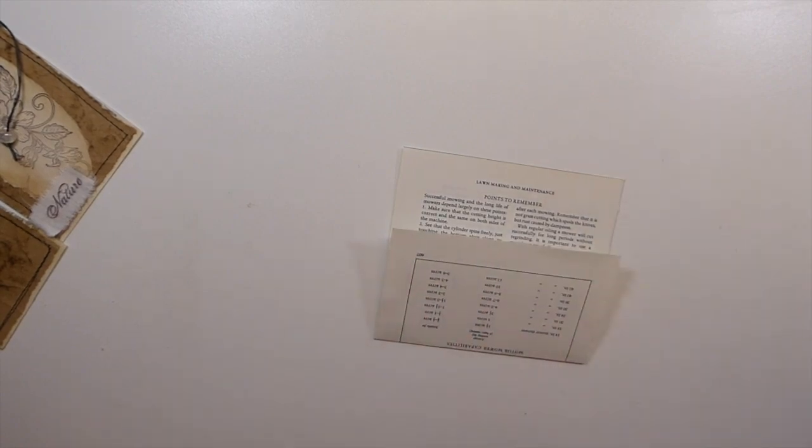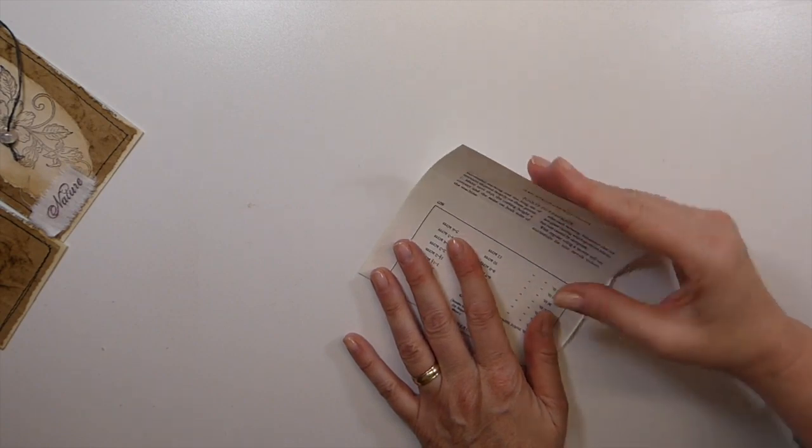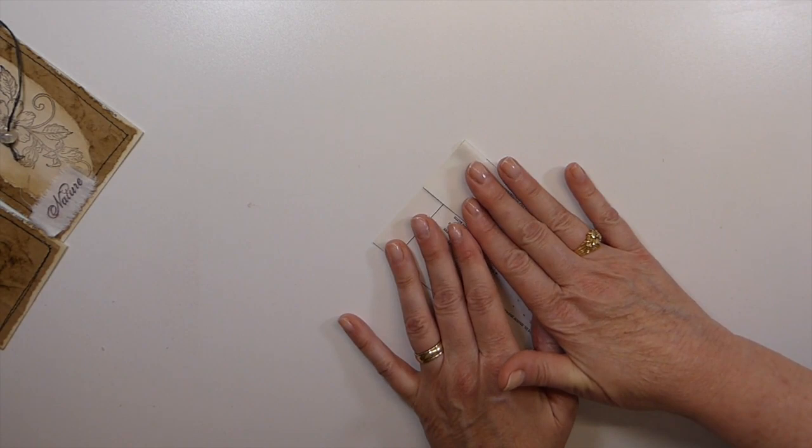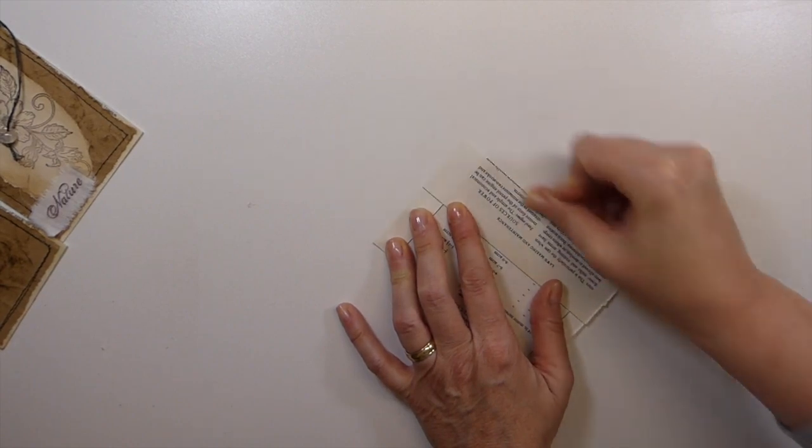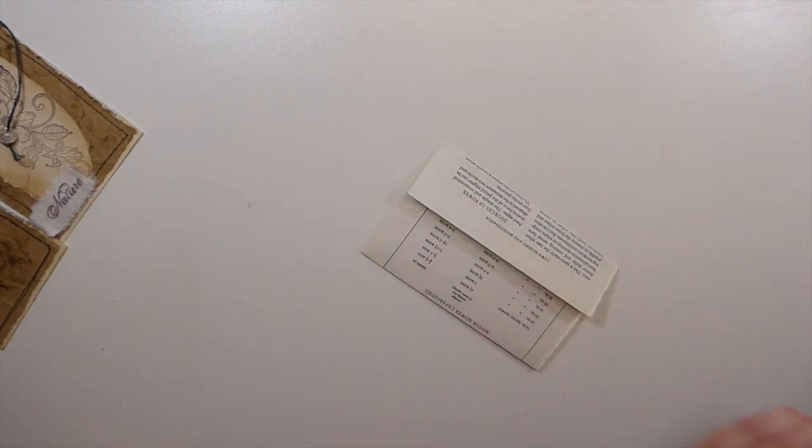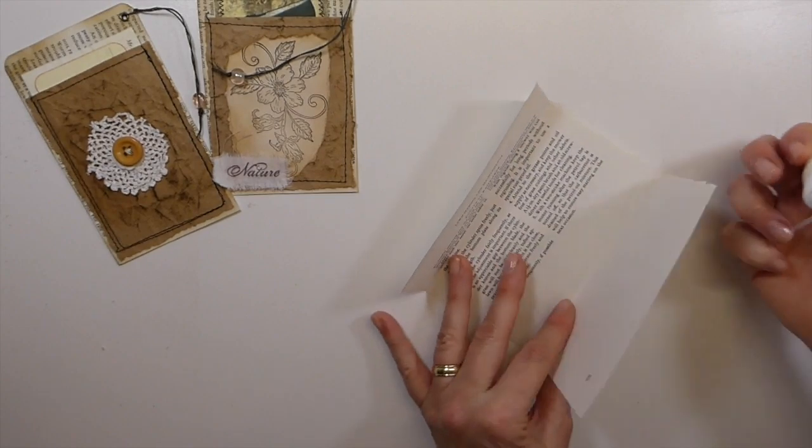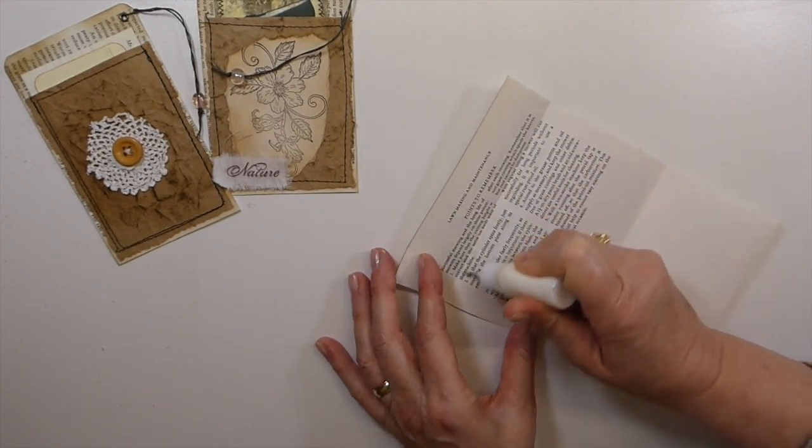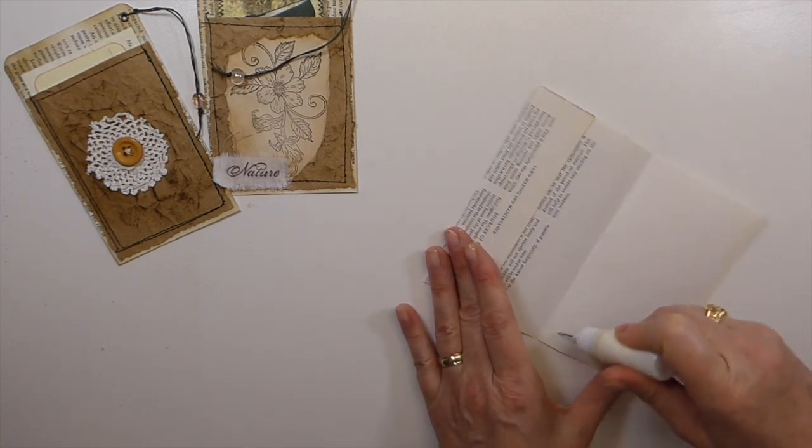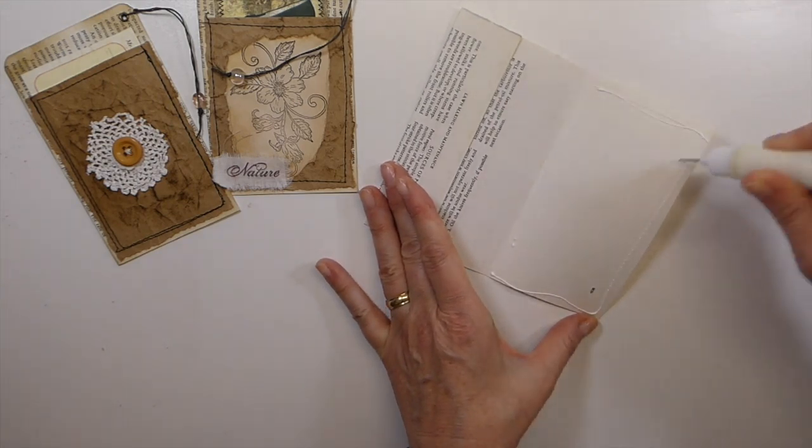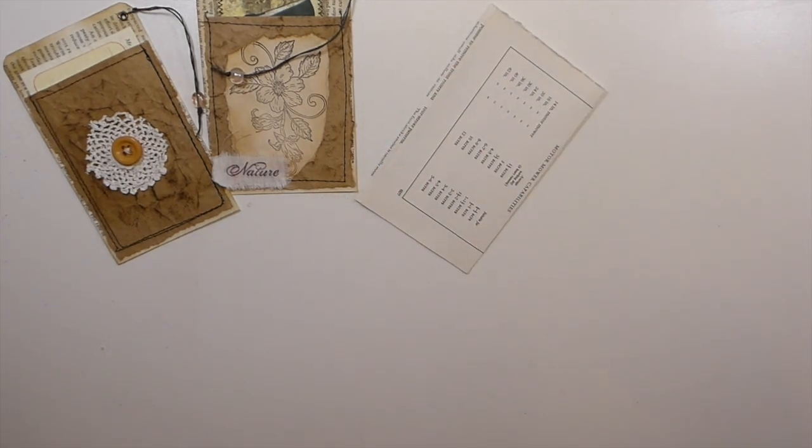Just decide on whatever size it is that you're wanting for yours. I try to keep my pockets under four inches because my journal pages tend to be around five, just to make sure that I know these are going to fit in. These can also be used as a floating pocket if you wanted to, you could just clip them in. I've just folded this over because I want to make it a little bit thicker, just so that it's sturdier within the journal.